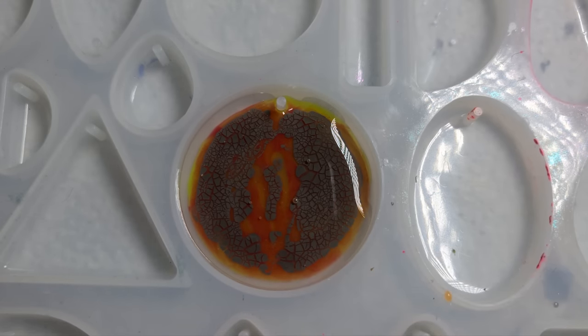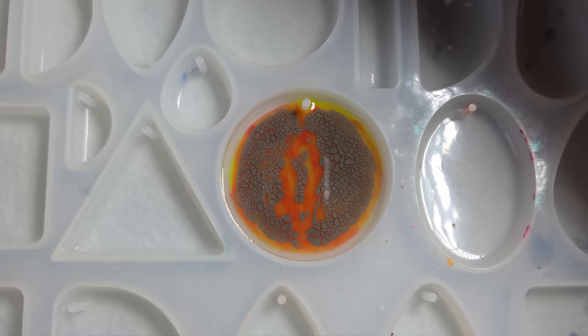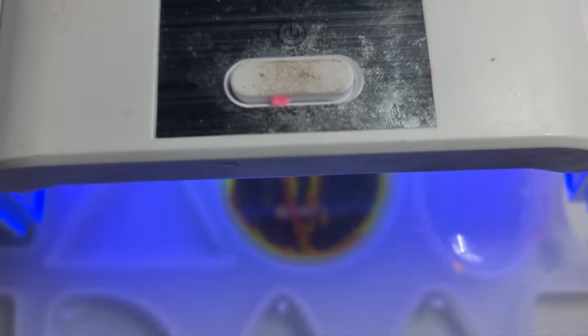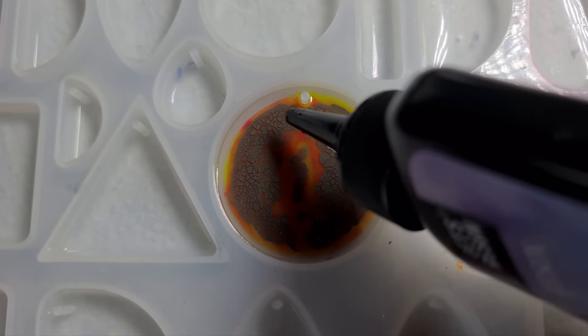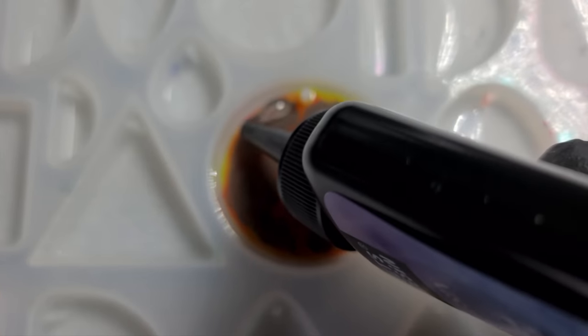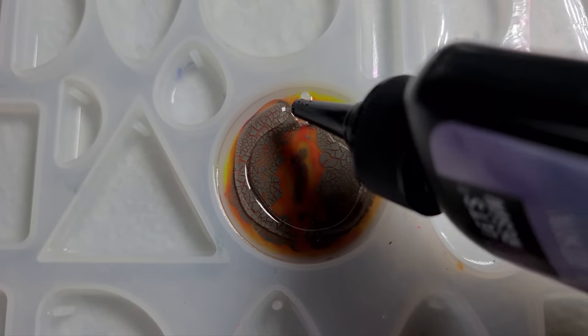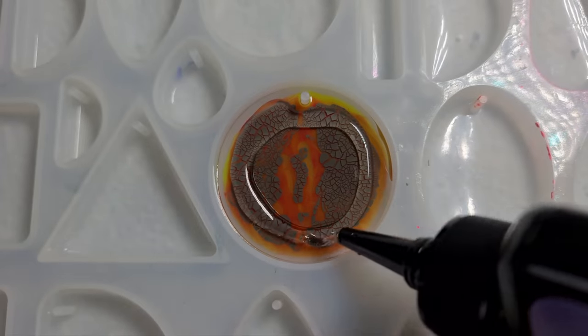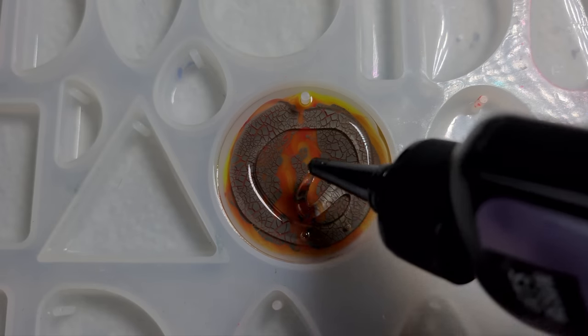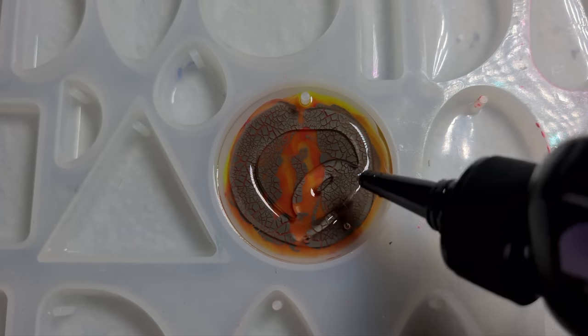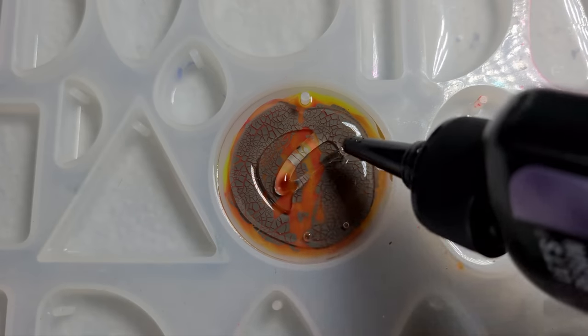So once you're happy with that thin coat we're just going to give that a fast cure. This part is optional - if you don't want to do this part you can just continue layering. This would be a lot better with two-part. You can see those crackles really, really nicely. I'm just applying another thin coat.